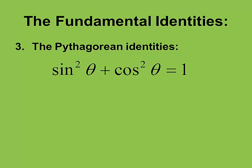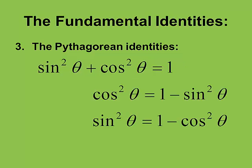We're going to get two more off of that using algebra. If I subtract sine squared from both sides, I get cosine squared equals 1 minus sine squared. Or if I subtract cosine squared from both sides, I get sine squared equals 1 minus cosine squared. These three — the base identity and the next two derived forms — we use these probably more than any other of the identities I'm going to talk about today.